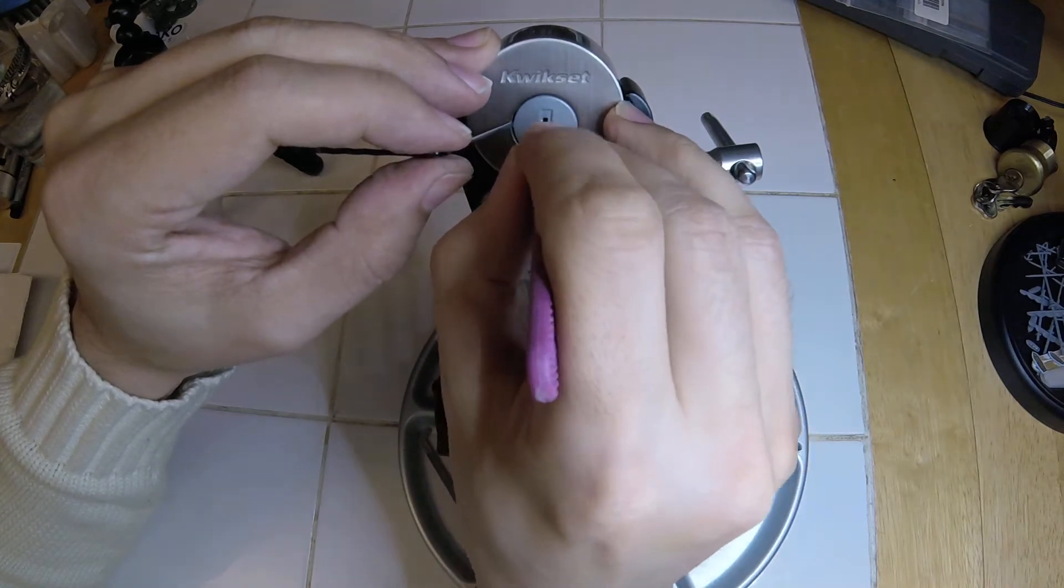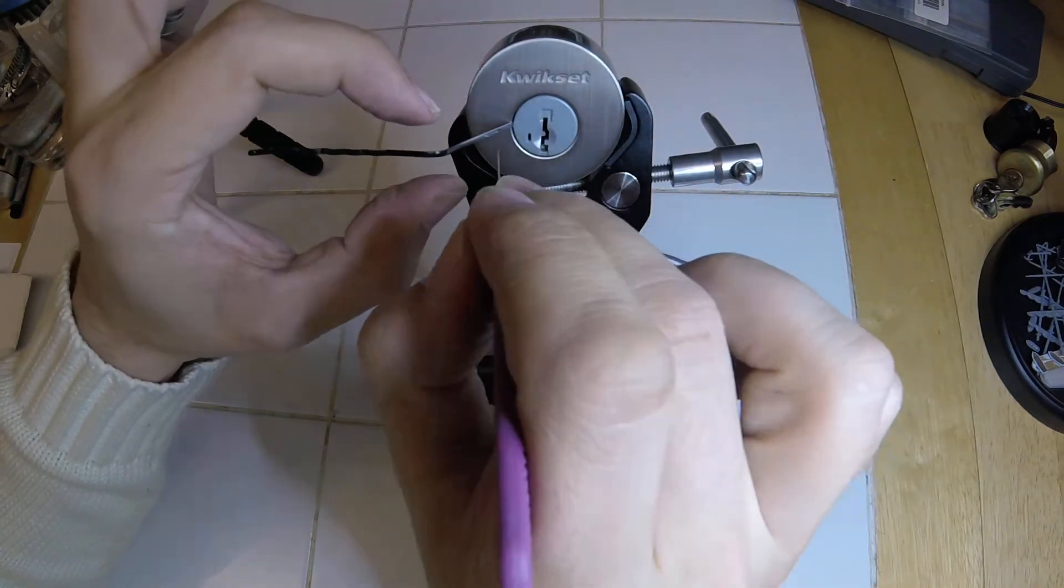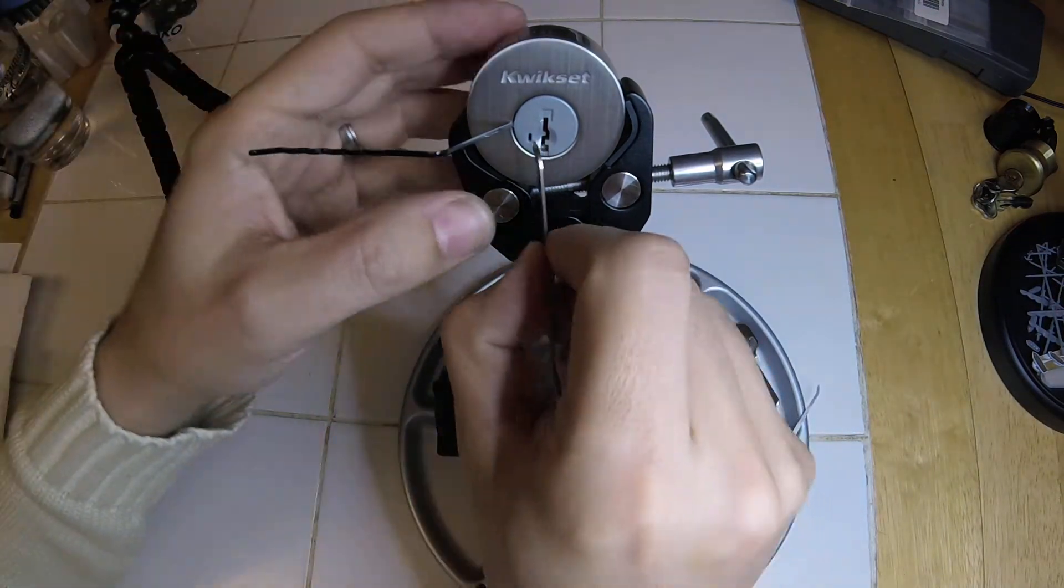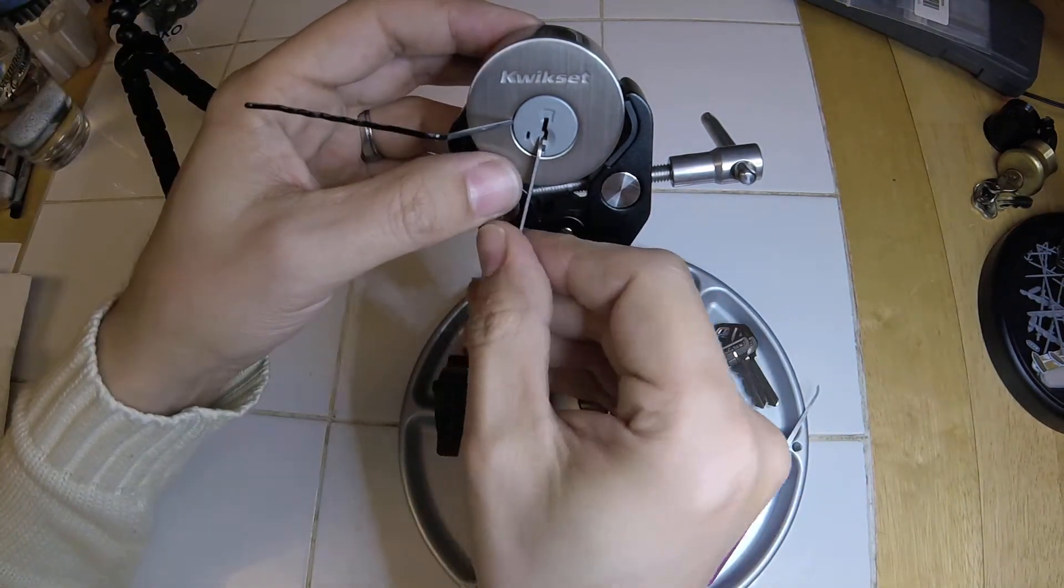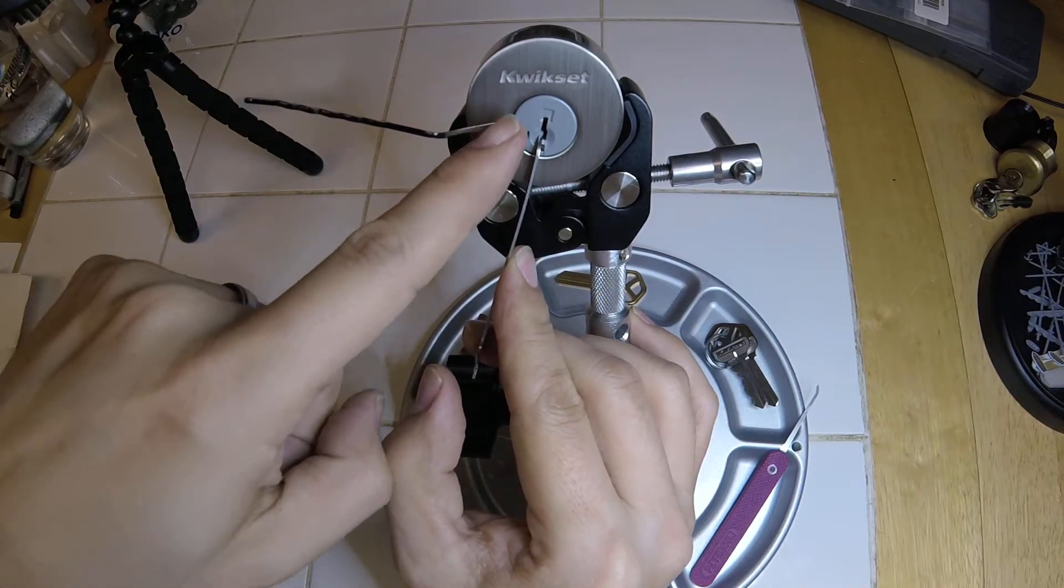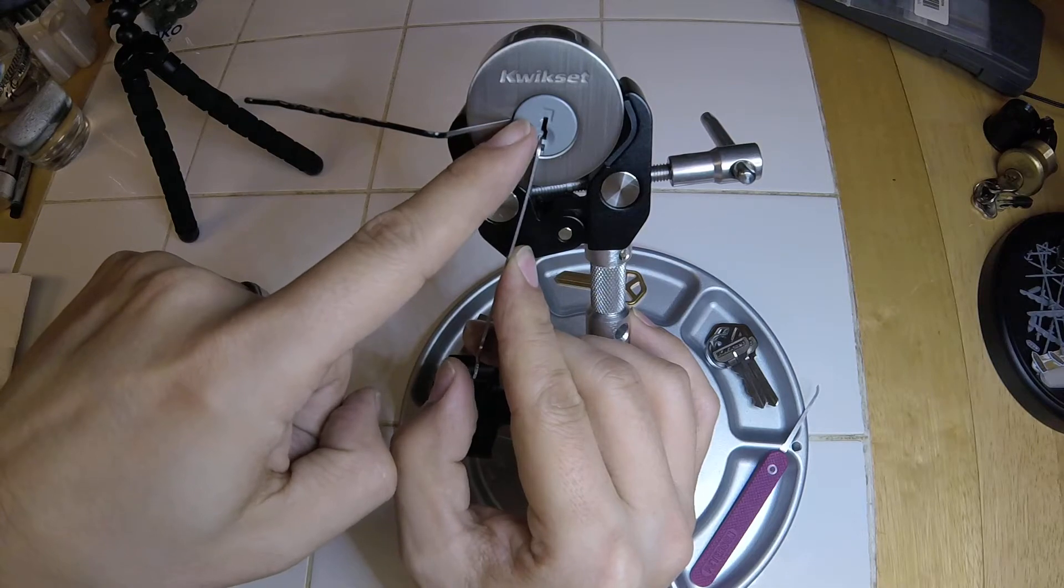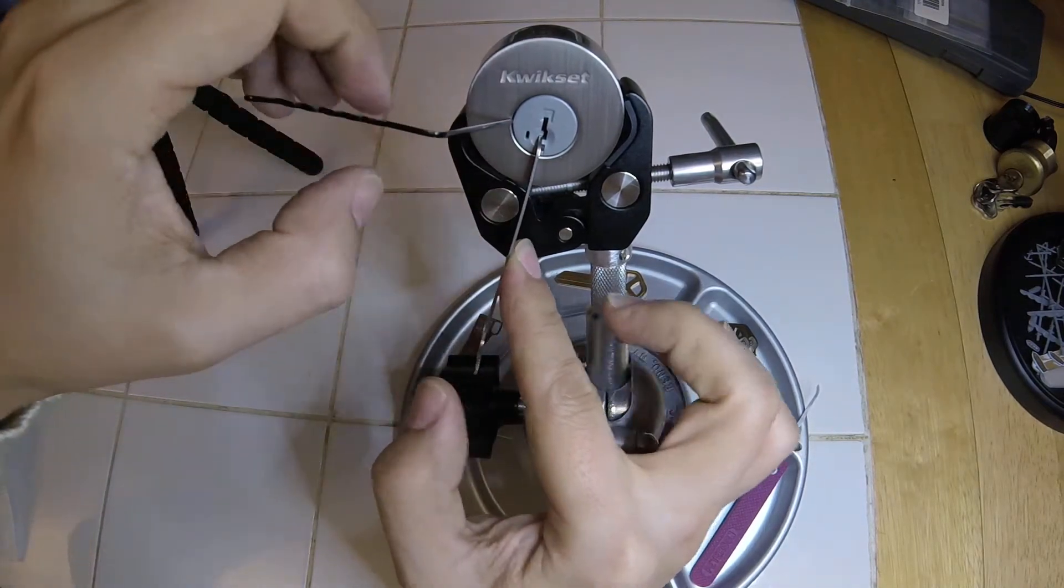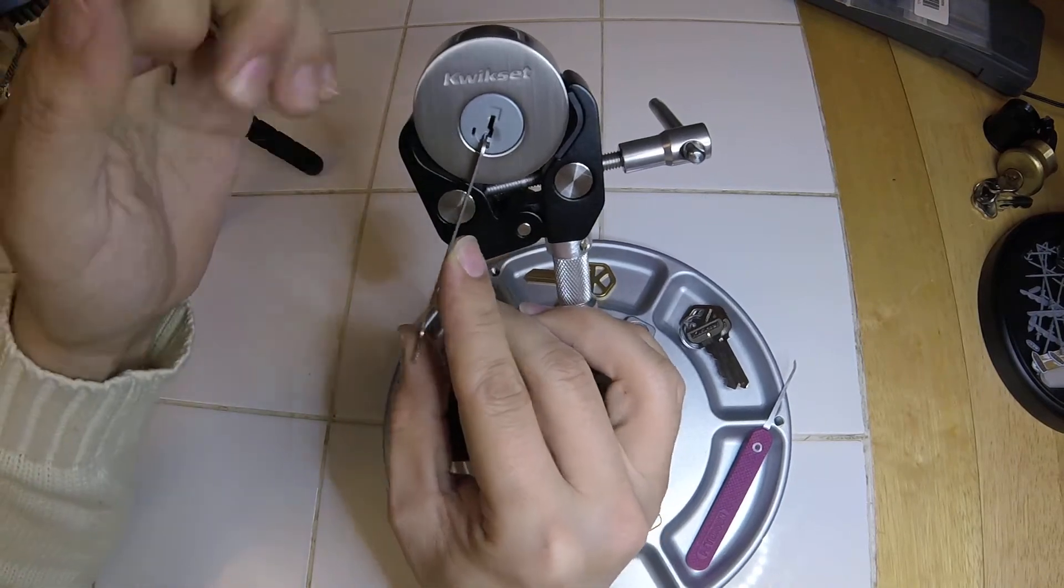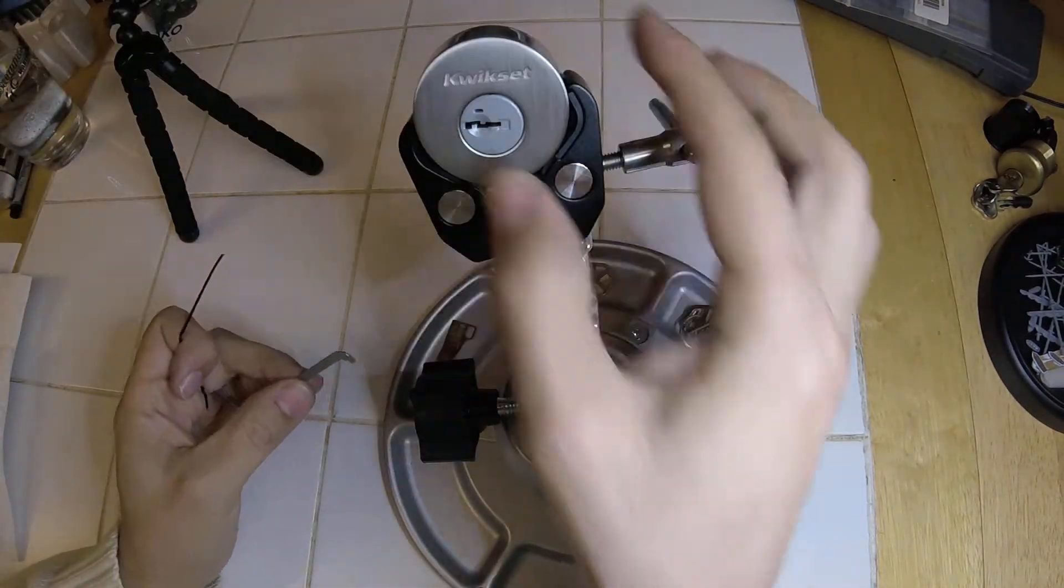When you lift them up, all the gaps on the side line up so that sidebar can drop in. What I'll do now is rotate, but this side shim is holding it in place. So while I'm putting tension, I've got to remove this from the lock to allow it to turn. And it's open, just that easy.